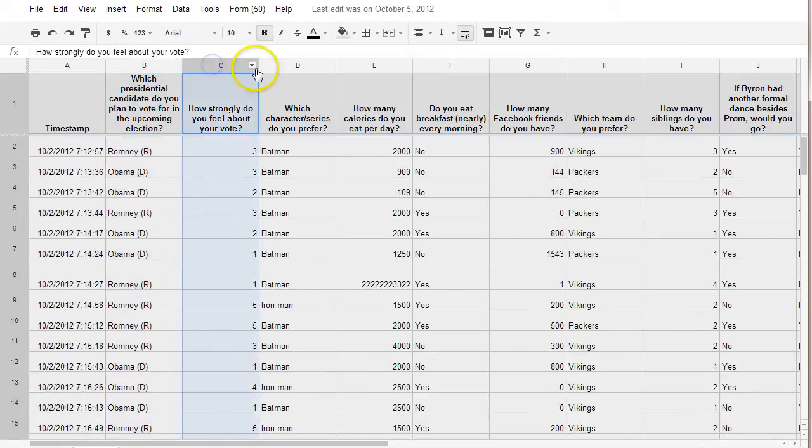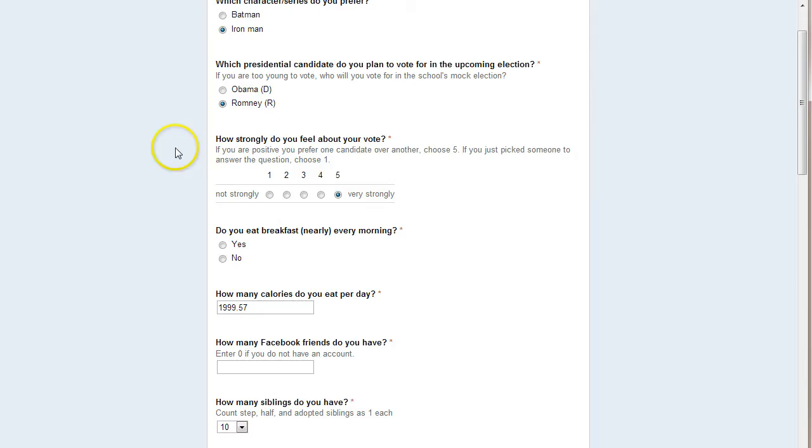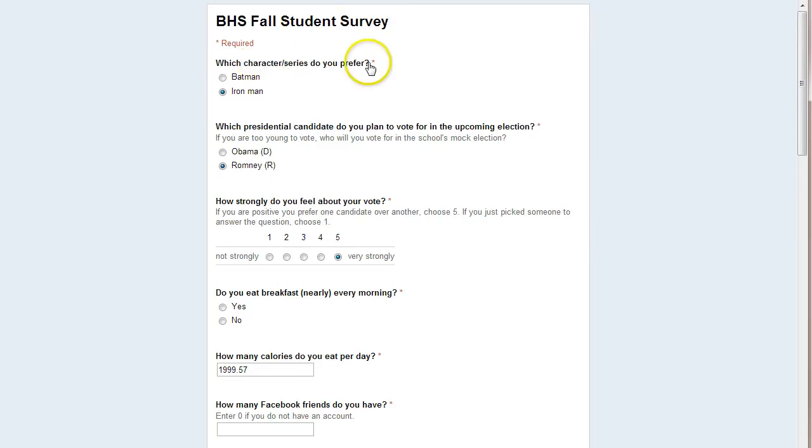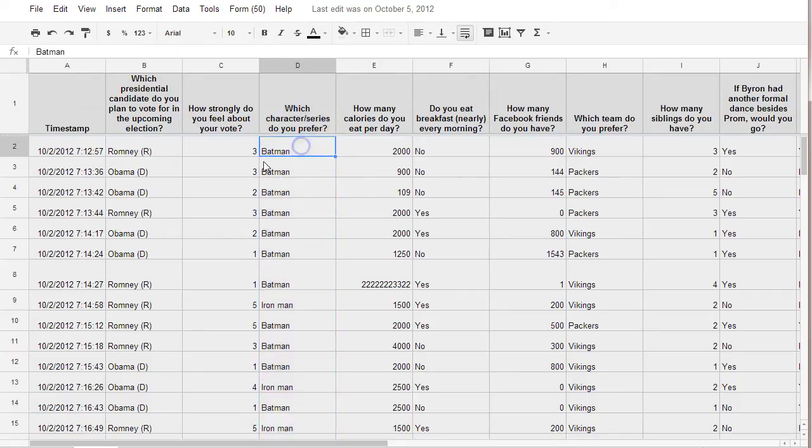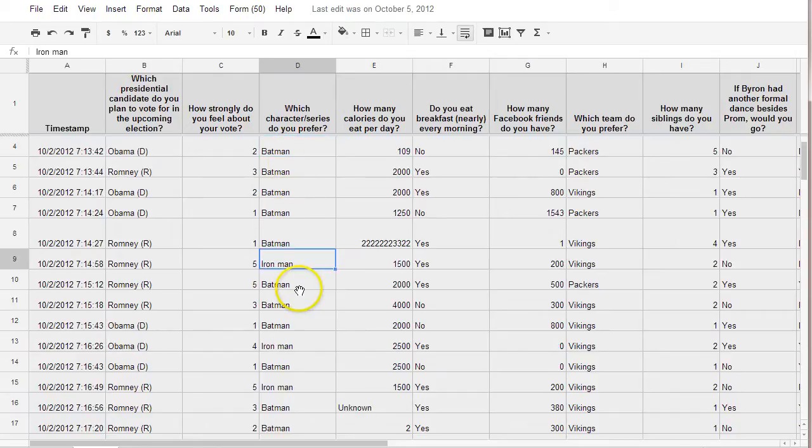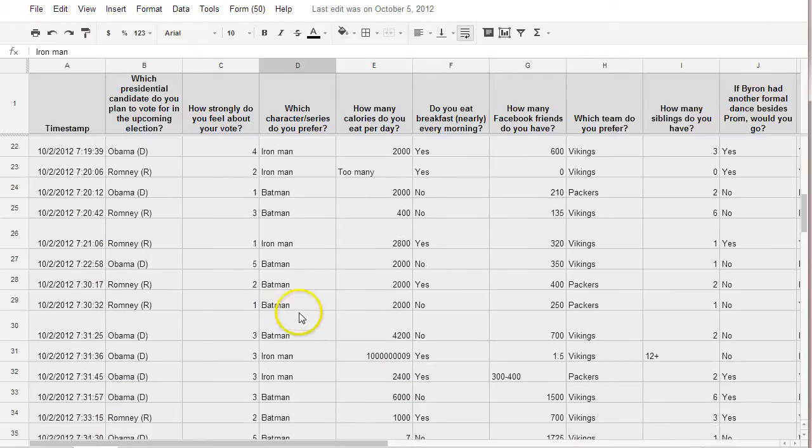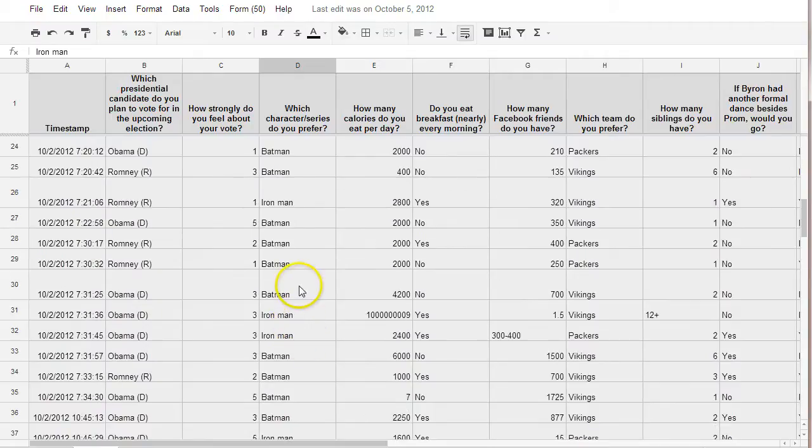Across the top, each of these represents one of the questions that we would have seen on our original survey. So a question right here, which character or series do you prefer, corresponds to the column right here where people have their answers all show up. And whatever answer they choose, Batman or Iron Man in this case, would be the only two possible responses you can get because people are forced to choose one of those two.